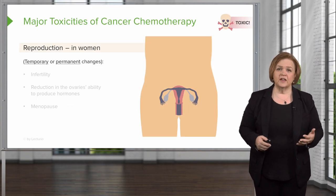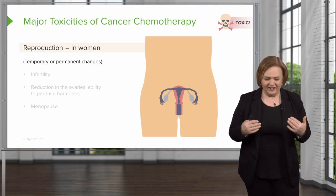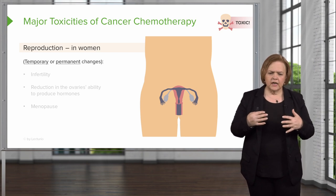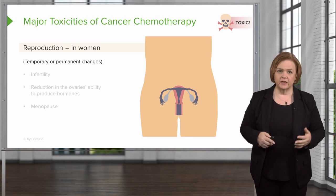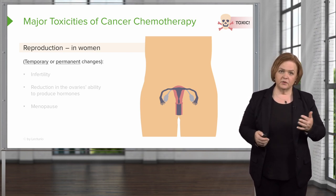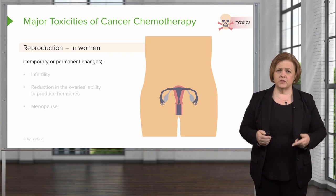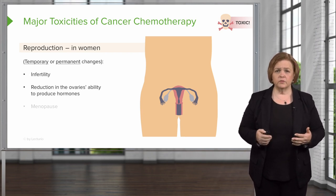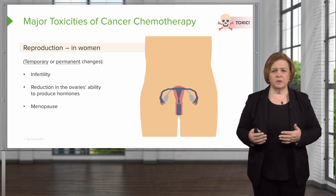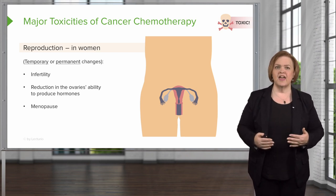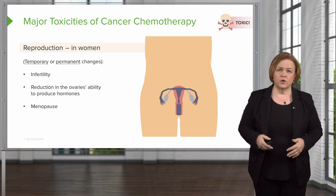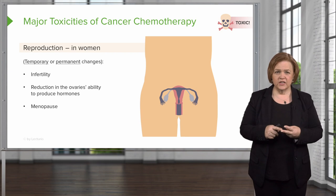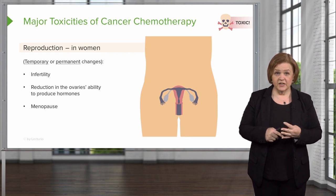As far as the female side, they might have some temporary and permanent changes, but it might put them at risk for infertility. Their ovaries might not produce the same levels of hormones, and it could throw them into menopause. So besides dealing with everything that comes along with cancer, now you're also dealing with disrupted hormone levels. So we've done hair, GI, skin, and reproduction.